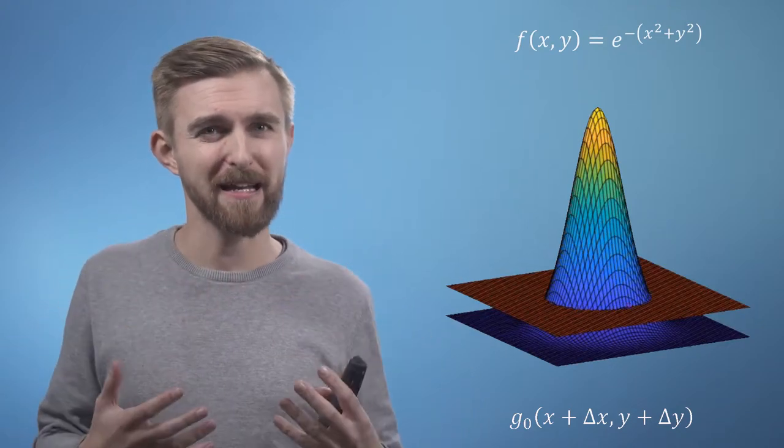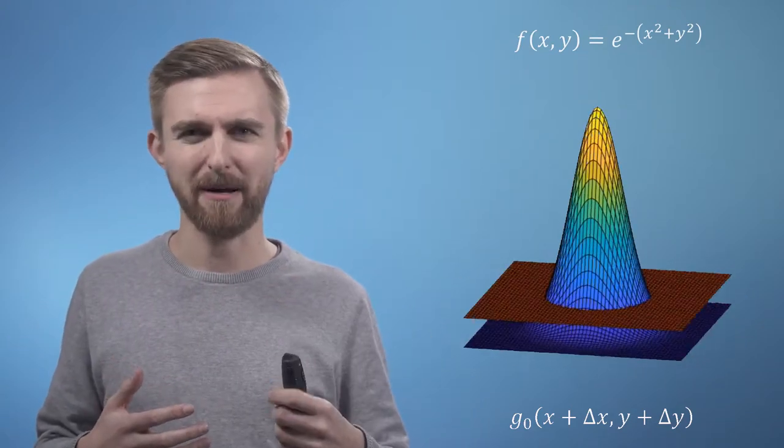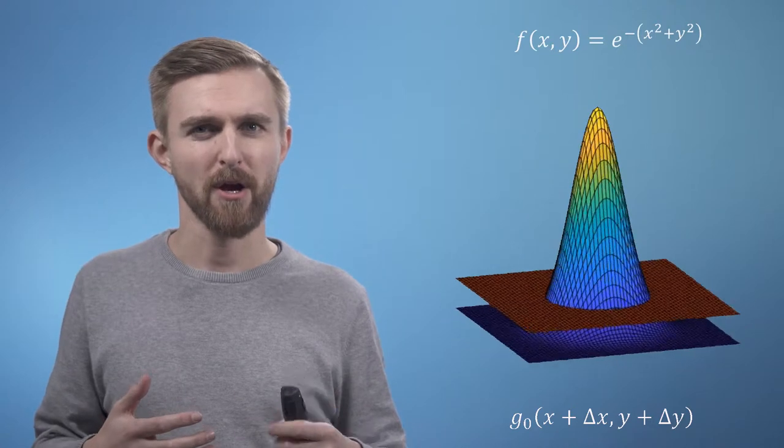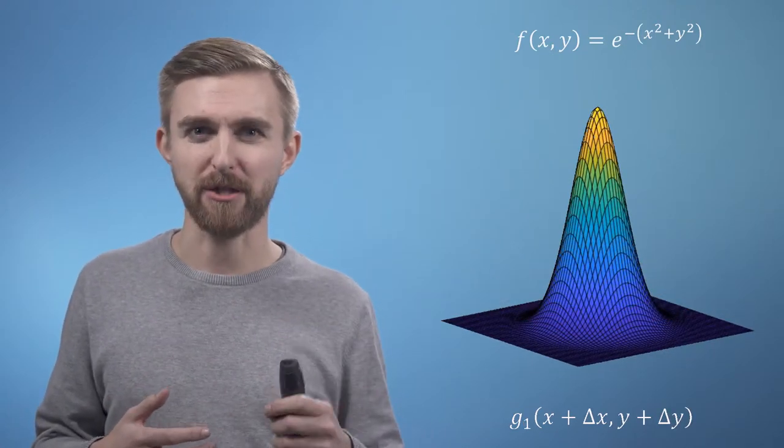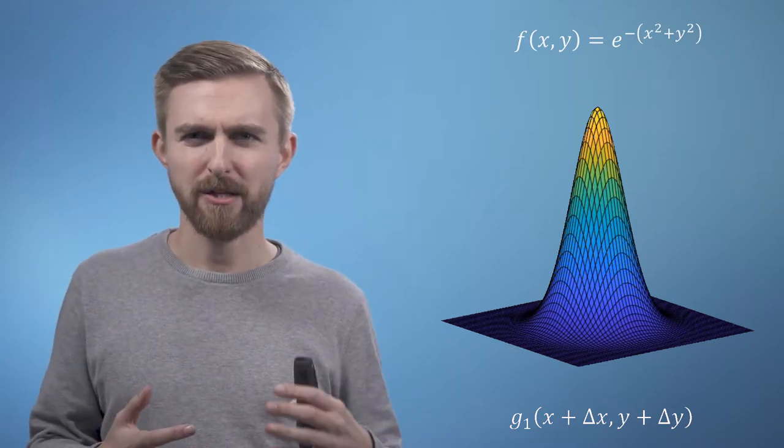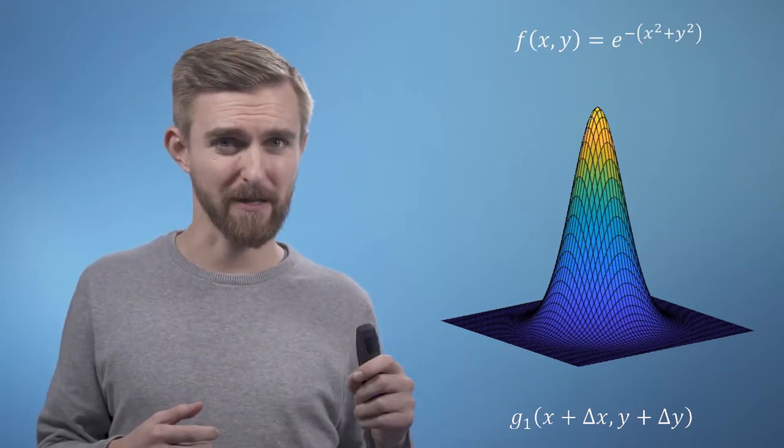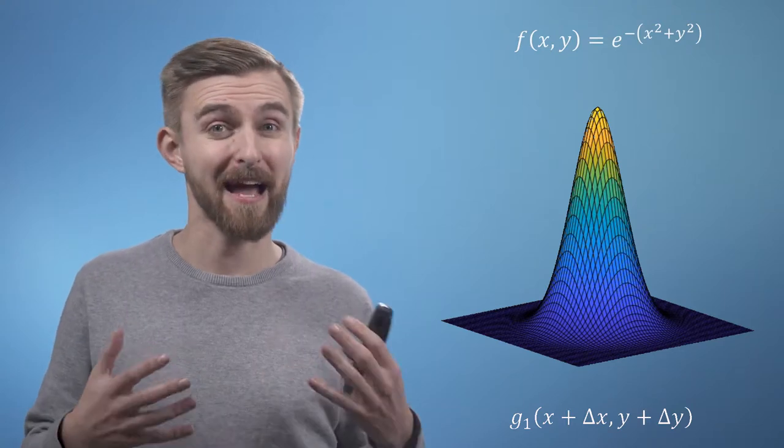This is fairly straightforward, but now let's think about the first order approximation. Drawing the analogy from the 1D case again, the first order approximation should have a height and a gradient. So we're still expecting a straight surface, but this time it can be at an angle.